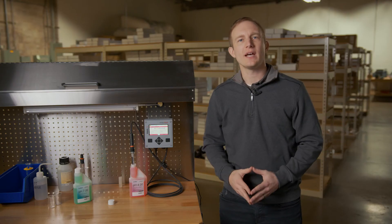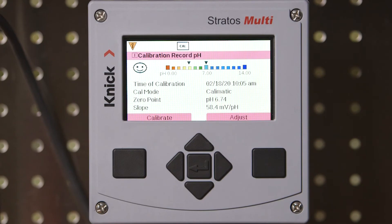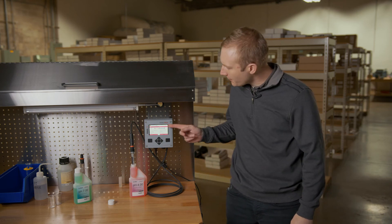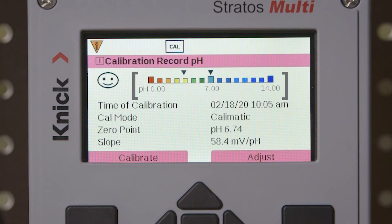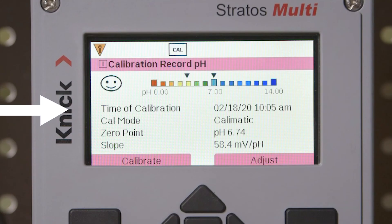Once complete in the second buffer solution, our Stratus Multi now displays the specifics of our calibration record. A pH chart at the top of the screen indicates the two buffer values that were used, 4 and 7. Next, we have a timestamp of our calibration, followed by the type of calibration that was performed, as well as the specific values of our zero point and slope of our electrode.